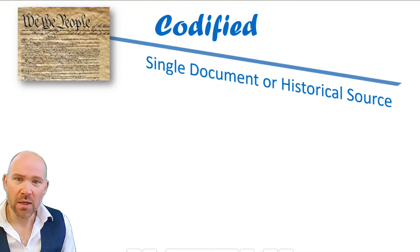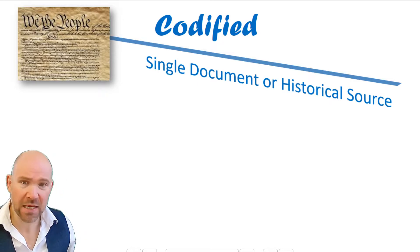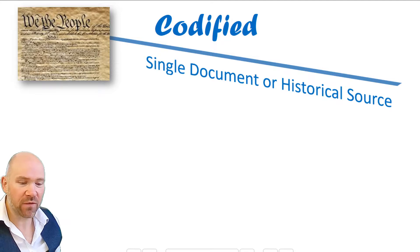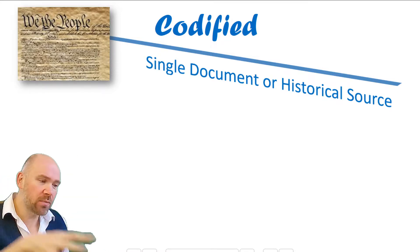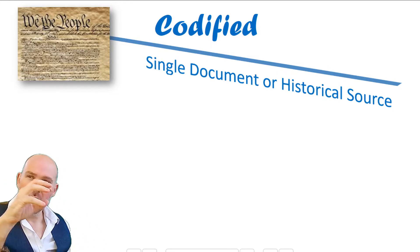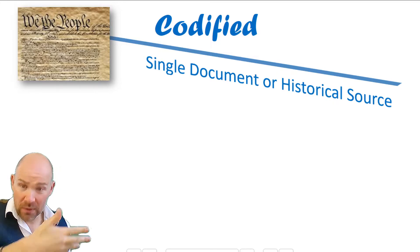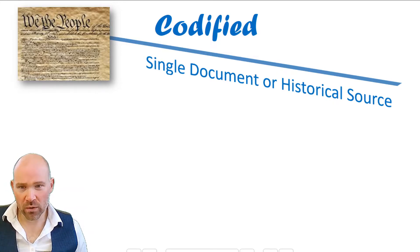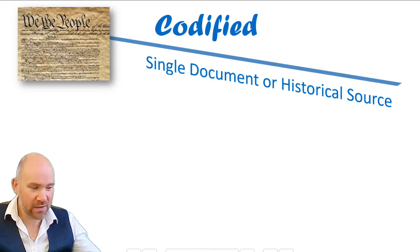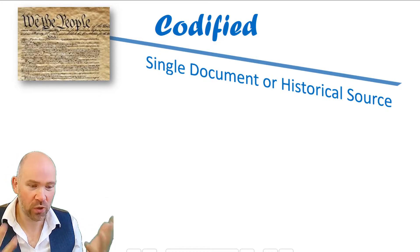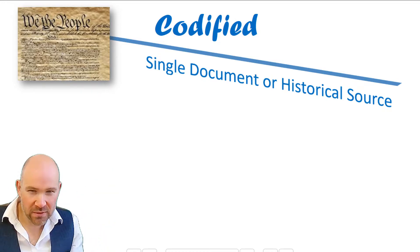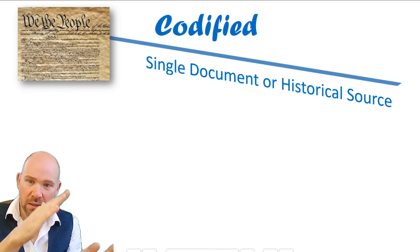So what does codified mean? First, a codified constitution tends to exist in a single document or historical source. By 'single document' I don't mean there's literally only one copy in the world — I mean that all the constitutional laws are found in one place, one document. And 'historical source' means it was normally all made at the same time, like the founding fathers in America. That's one reason why newer countries tend to have this and older countries don't — newer countries tend to have a moment when someone sits down and creates a constitution.